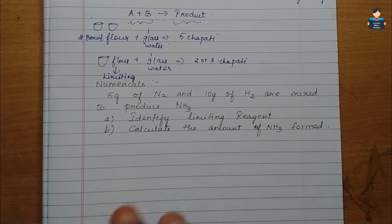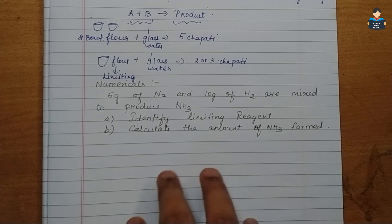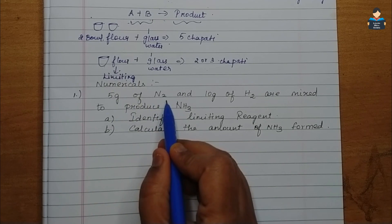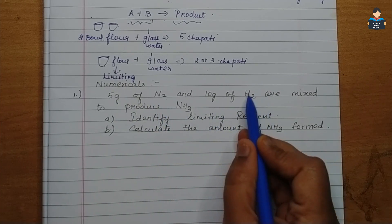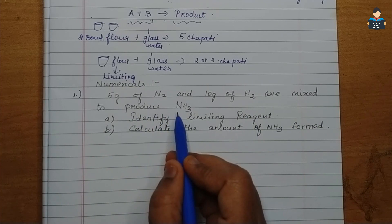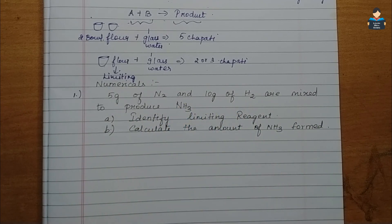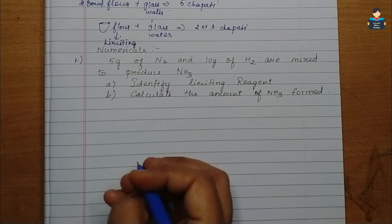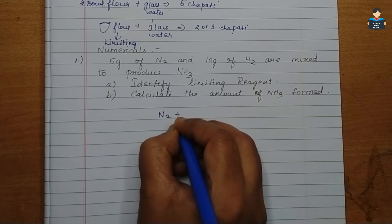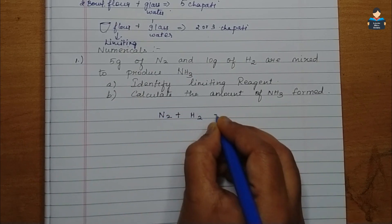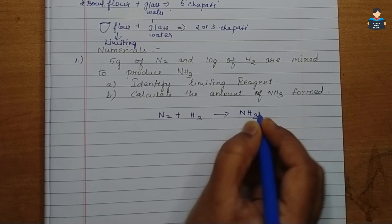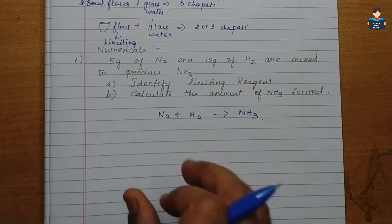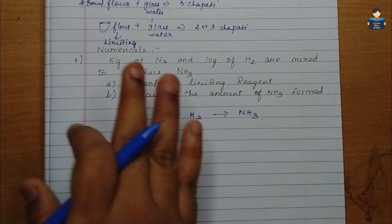Now, numericals based on this concept. Let's clarify the concept first with a sum. First numerical: 5 grams of nitrogen and 10 grams of hydrogen are mixed to produce ammonia NH3. Write the equation: N2 plus H2 will give NH3. This is the unbalanced form — first, balance it. Balancing the equation is the first step.